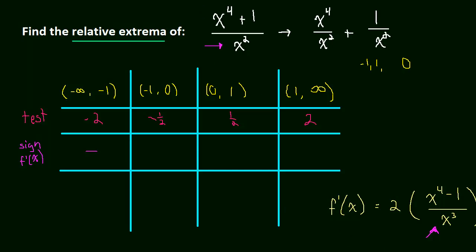In the last video we took the derivative of this function at the top of the screen and we started the first derivative test. We found our critical numbers, our asymptote, and we picked test values.